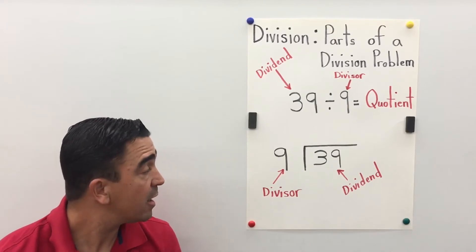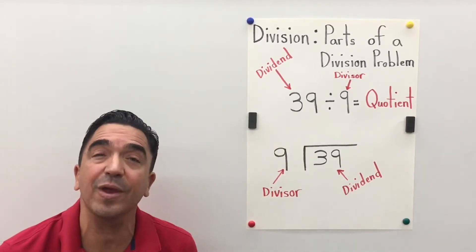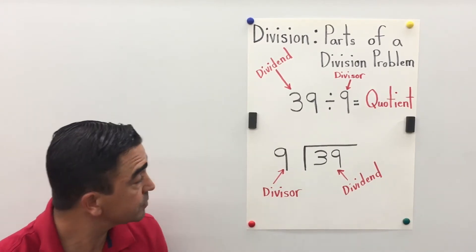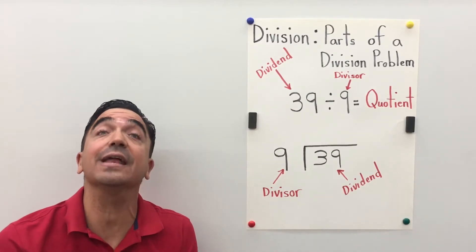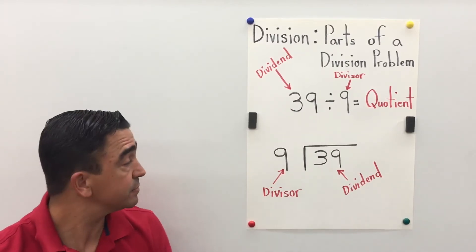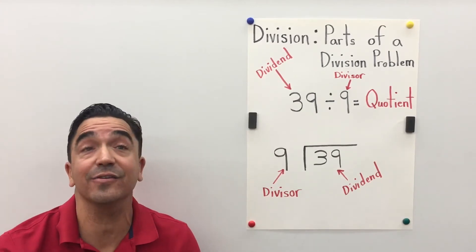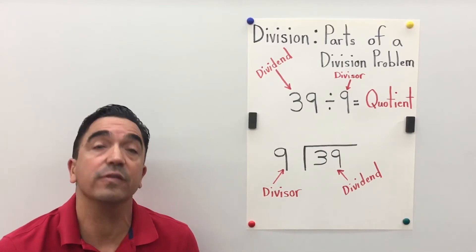This is the same problem, but in this problem we are going to solve it vertically. So 39 is the dividend, the number being divided. 9 is the divisor, the number by which the dividend is being divided.